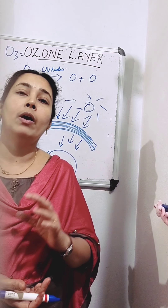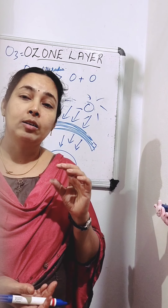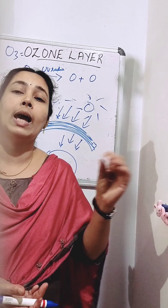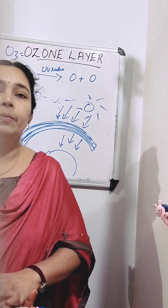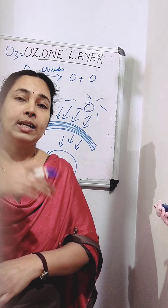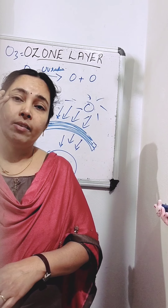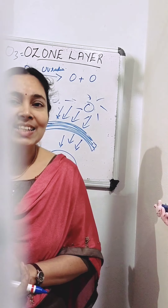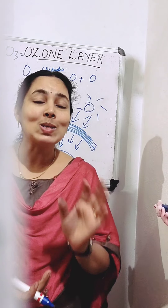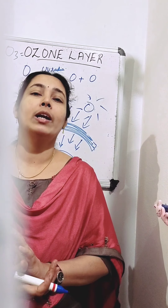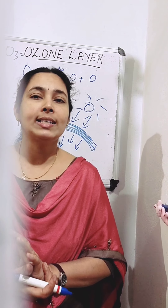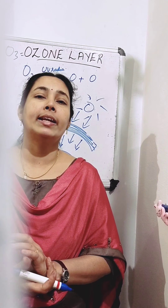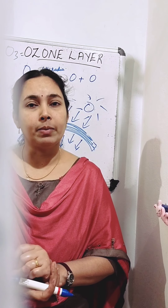The ultraviolet radiations have extremely harmful effects on human beings and other animals. They may cause skin cancer, they affect our eyes, they affect our immunity system — so many problems. Thus it is the ozone layer in the upper atmosphere which protects us from these diseases by absorbing the ultraviolet rays coming from the sun.